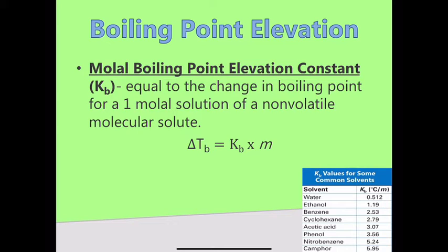Yesterday we talked about three different colligative properties. Colligative properties are properties where you have a solvent, and when you add a solute to that solvent it changes the properties of the solvent. Those properties that are changed based on the amount of solute you add are referred to as colligative properties. We discussed three of them: vapor pressure lowering, boiling point elevation, and freezing point depression. When you add a solute, it's going to lower the vapor pressure, lower the freezing point, and raise the boiling point.